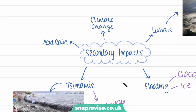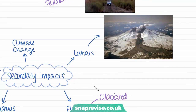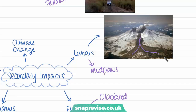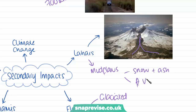Then we have lahars, which are volcanic mud flows. We can see one in this image — the mud flow coming down from the volcano. This is when melted snow and ice is combined with ash to form a mud flow. They flow at very high speeds, can kill people easily, and can destroy towns and villages. They are also very hot.